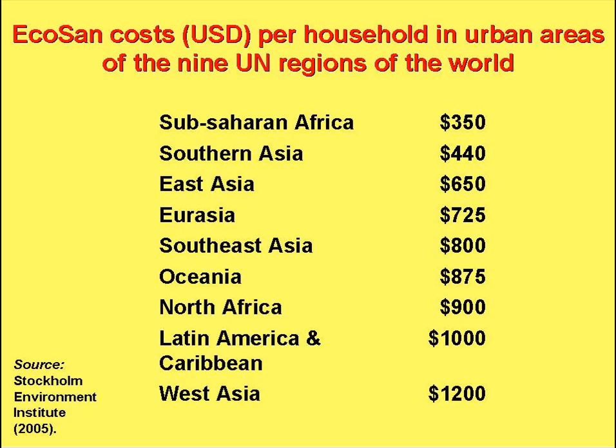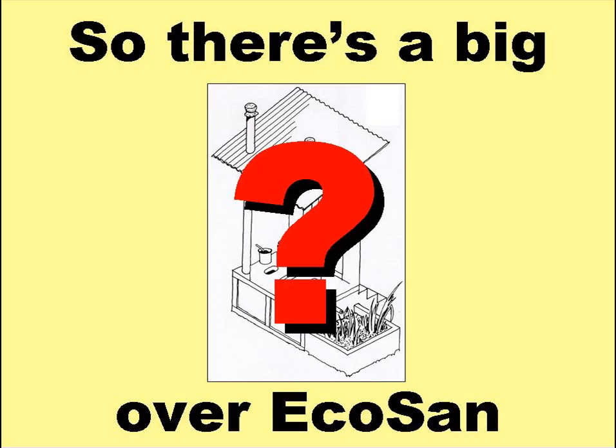These Ecosan costs, taken from a 2005 report by the Stockholm Environment Institute, are for urban areas in the nine United Nations regions of the developing world. As you can see, they are really very high indeed. There are many Ecosan projects around the world, but in developing countries there's usually a massive subsidy which pays for most, if not all, of the construction cost of an Ecosan toilet. But so many people require improved sanitation if we're to meet the MDG sanitation target by the end of 2015, that there won't be the money available to subsidise all Ecosan toilets. This means, to my mind at least, that simply on the grounds of cost, there's a big — in fact a very big — question mark over ecological sanitation.